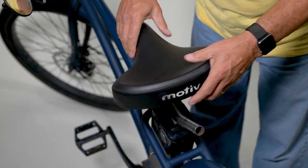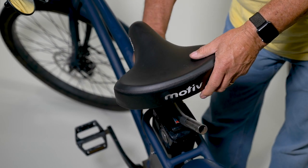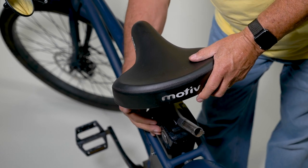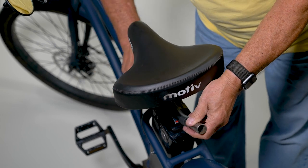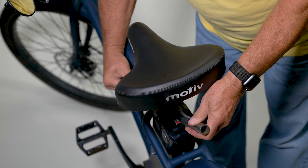When you reattach the seat keep in mind there must be a minimum of three inches of seat post inside the frame. Make sure the seat is secure and that the seat clamp is lined up with the frame as shown here.